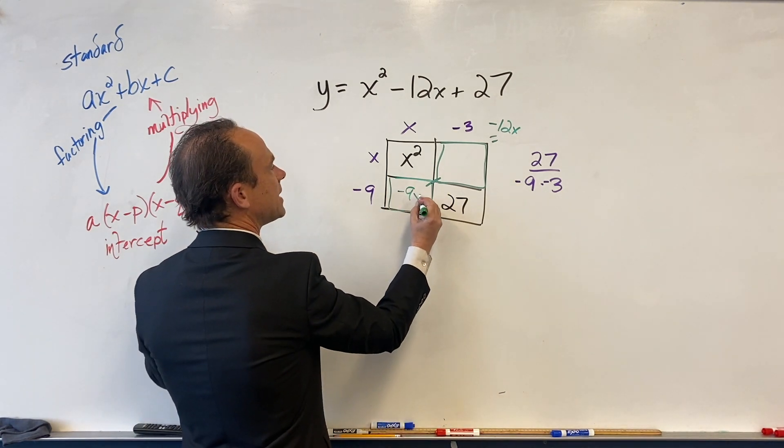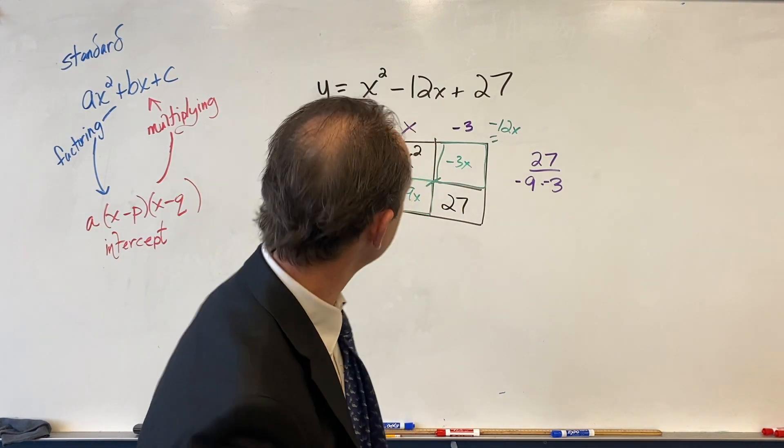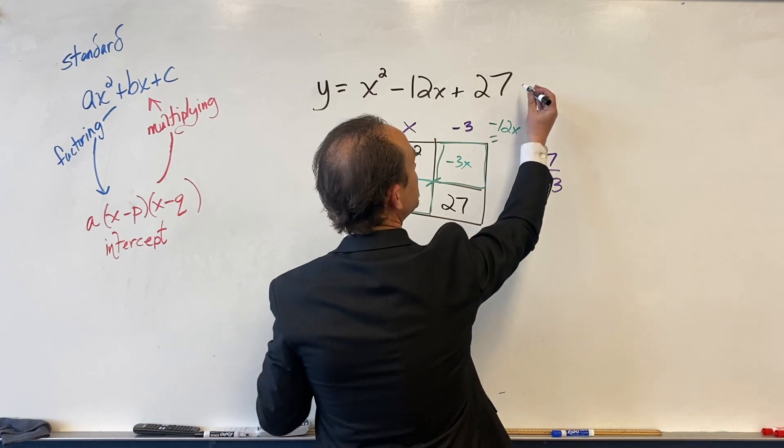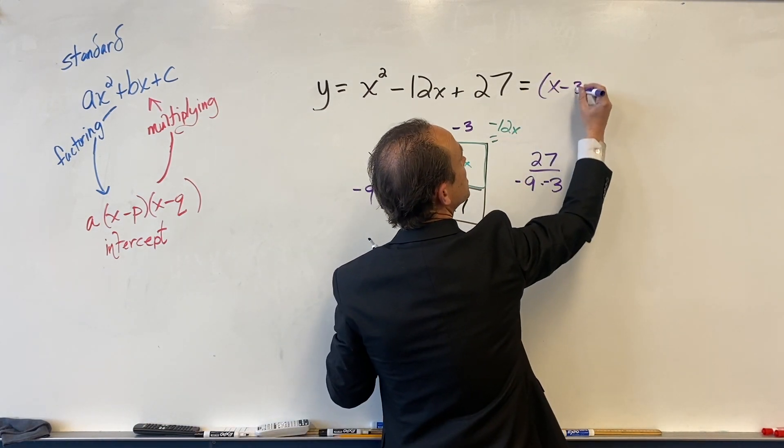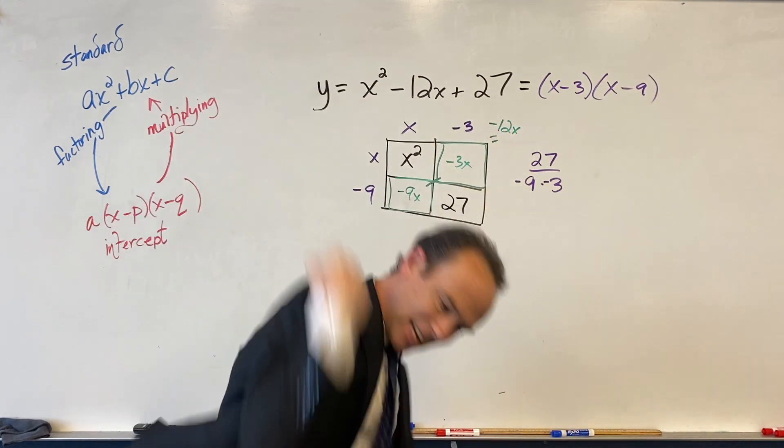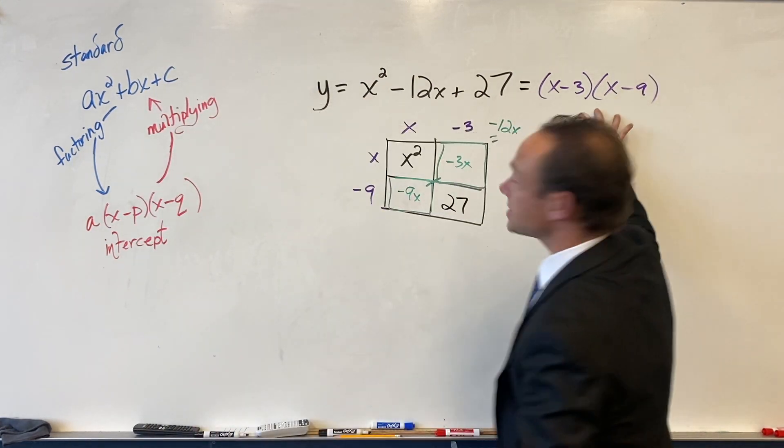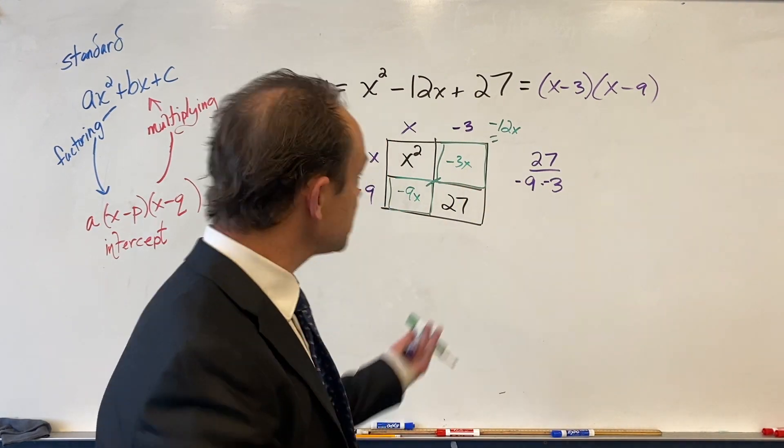All right, let's check. We got minus 9x, minus 3x. Looks like we're golden. So you rewrite this area as its dimensions. So here we go: x minus 3, x minus 9. Yes, so this is it expressed in intercept form.